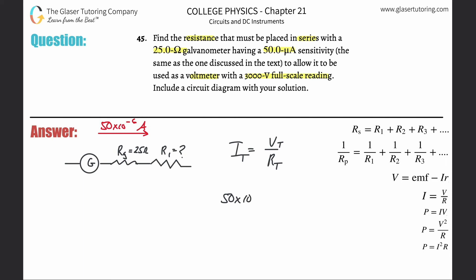Let's start plugging stuff in. So 50 times 10 to the minus 6 will equal the voltage of 3000 all divided by, then we're going to add these two together. So remember it's basically going to be Rg plus Ri. We know Rg, they gave it to us: 25 ohms. Now we're going to solve this for Ri.